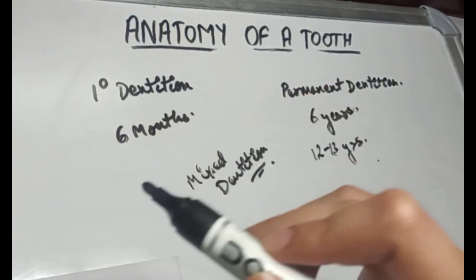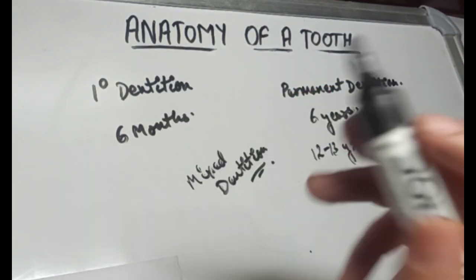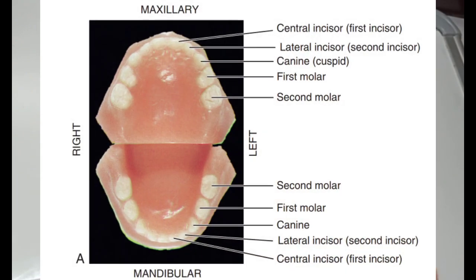In the primary dentition, we have only 3 types of teeth: incisors, canines, and molars. So premolars are missing in the primary dentition.